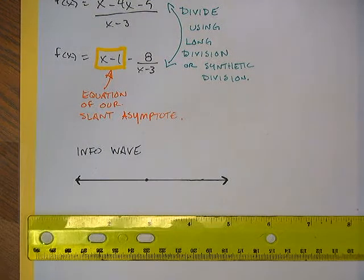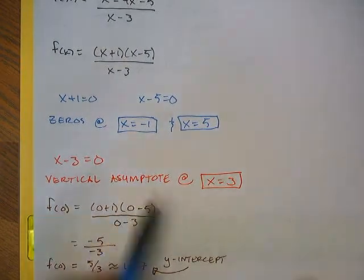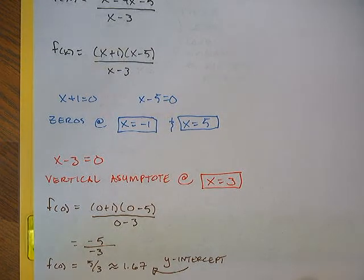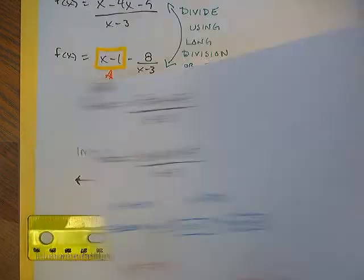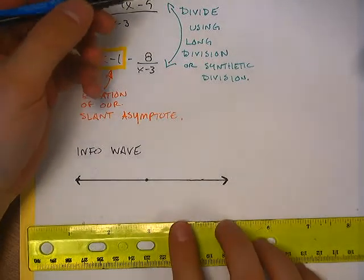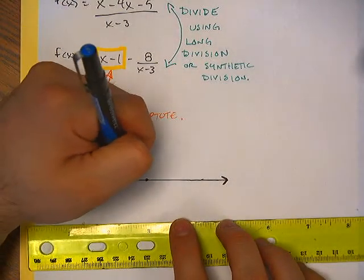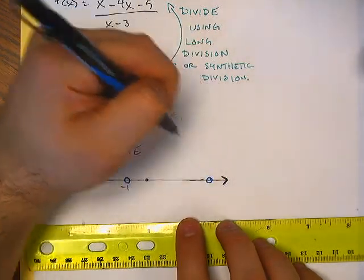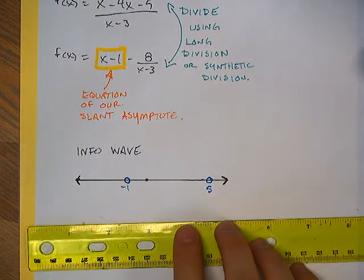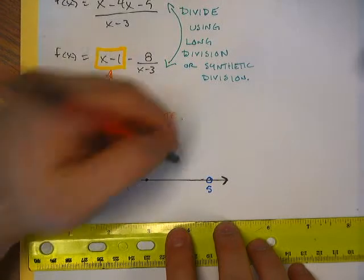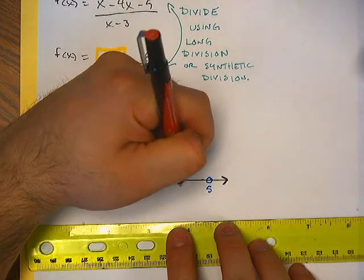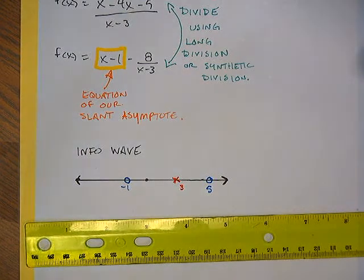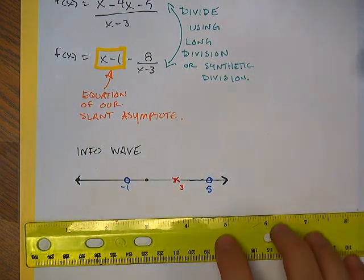I'm going to label just two different characteristics on my number line — my information wave: the zeros and the vertical asymptotes. I have a zero at negative 1 and a zero at positive 5, and I have a vertical asymptote at x equals 3. Zeros get a little blue circle, and asymptotes are denoted by a red x. I'm not really drawing this to scale — it's just so I can see where I'm going to be positive and where I'm going to be negative.